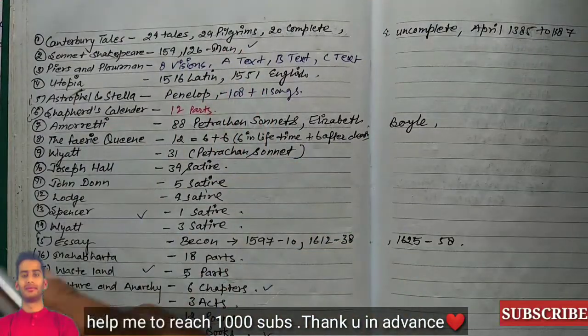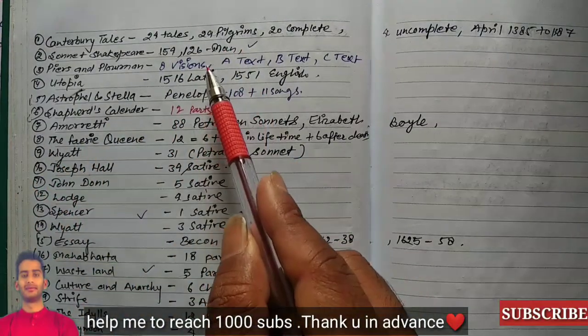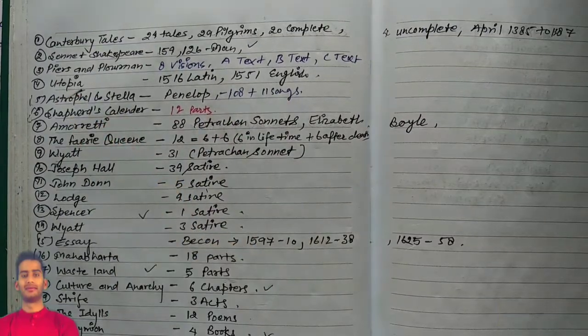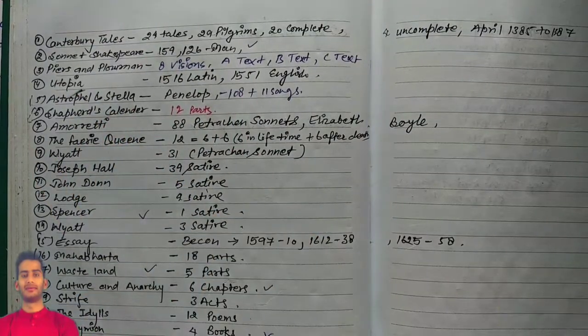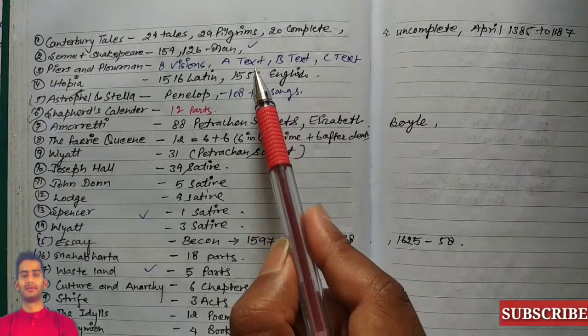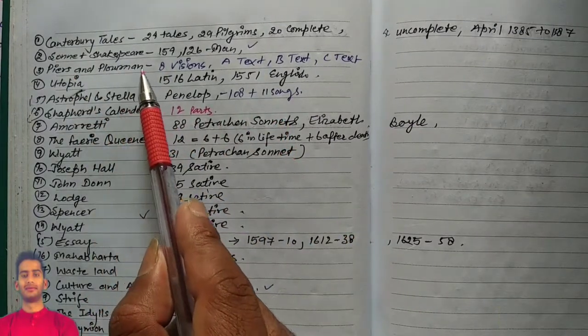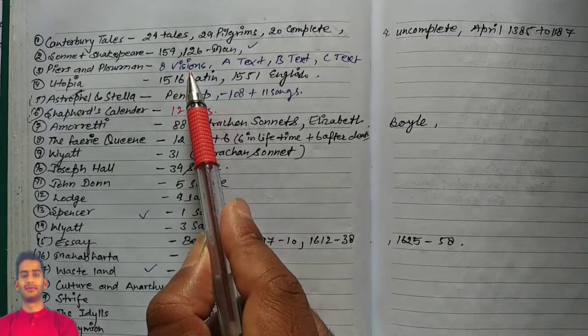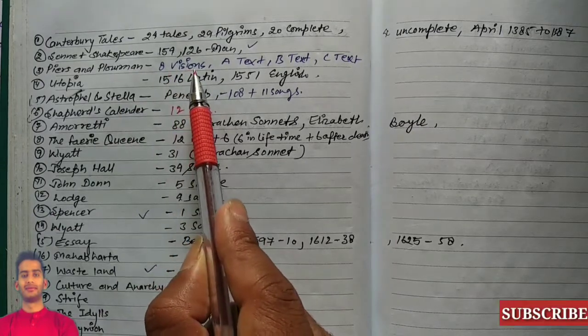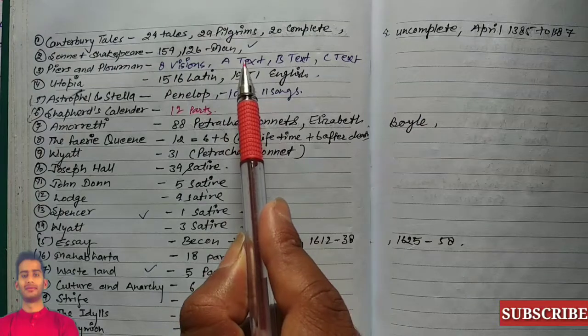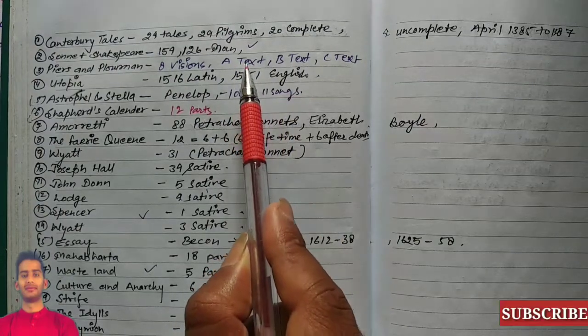Piers Plowman: there are eight visions in this work by Langland, and this is divided into A text, B text, and C text.